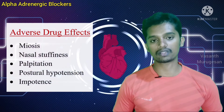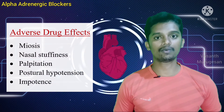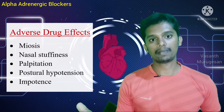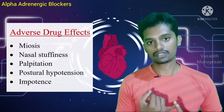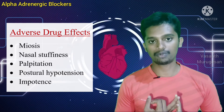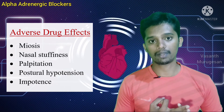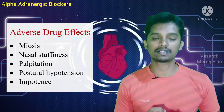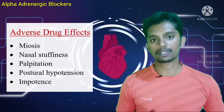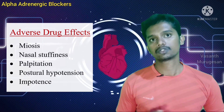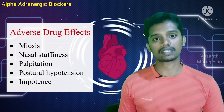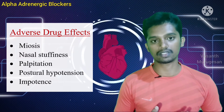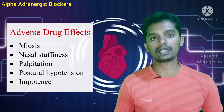Adverse drug effects of alpha adrenergic blockers include: miosis, nasal stuffiness, palpitations, decreased resistance to urine flow, and postural hypotension. Postural hypotension means when a supine patient stands up, they may feel a sudden fall in blood pressure. There are also some severe adverse effects.